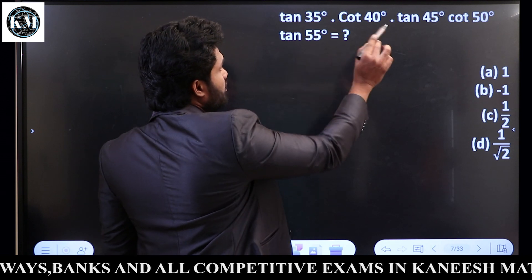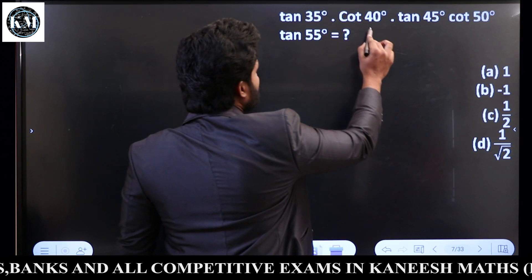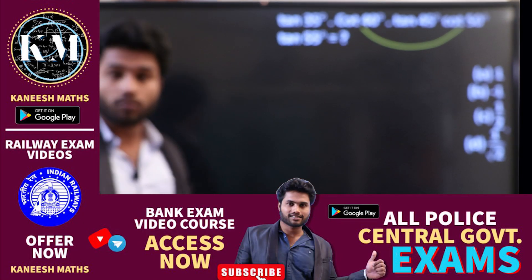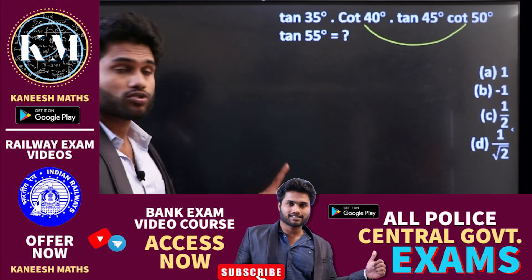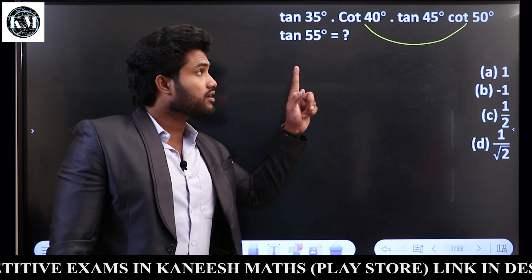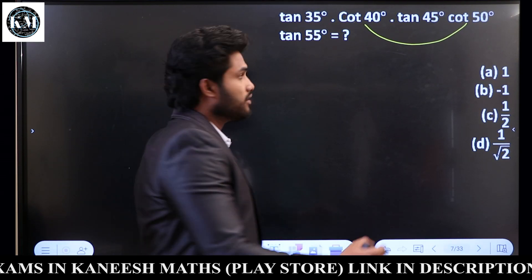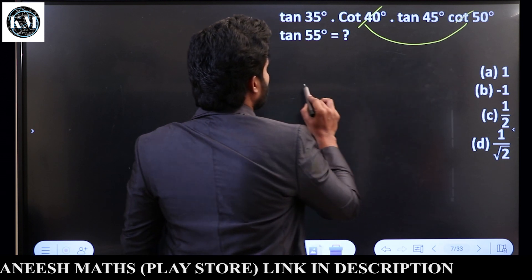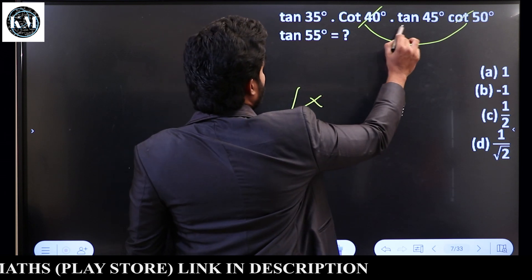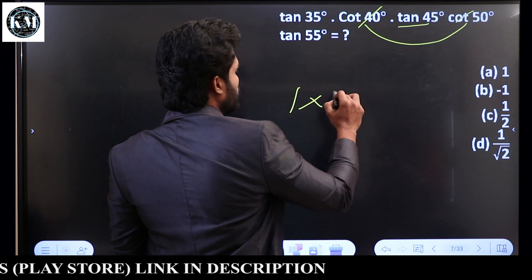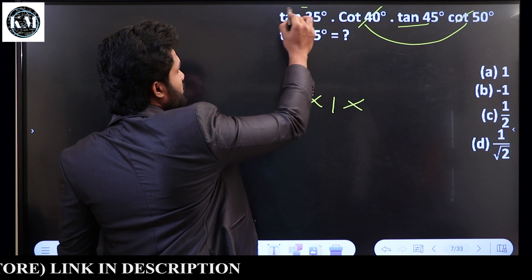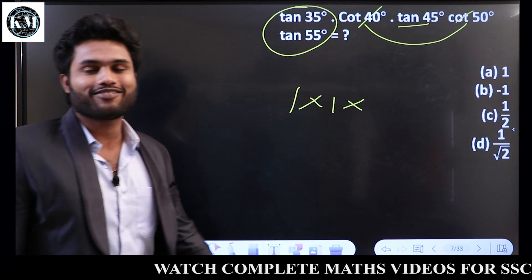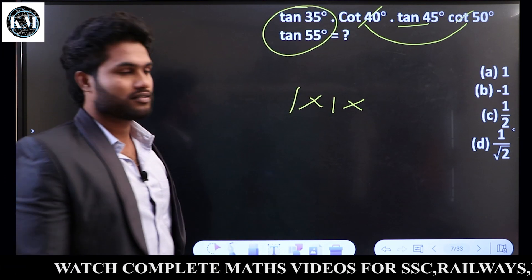This is Cot A and Cot B. If you add them to 90 it equals 1. So Cot 50 × Cot 40 equals 1. Also Tan 35 × Tan 55 equals 1. The question is: Tan 35 × Cot 40 × Tan 45 × Cot 50 × Tan 55.